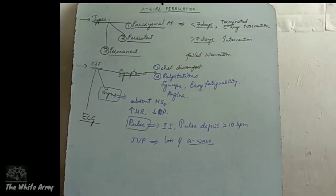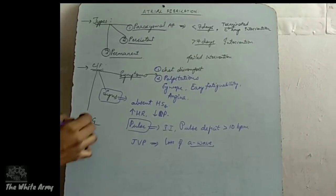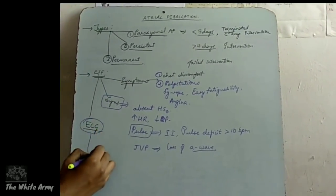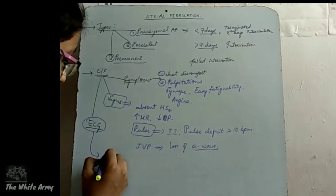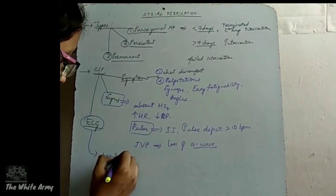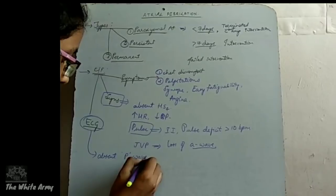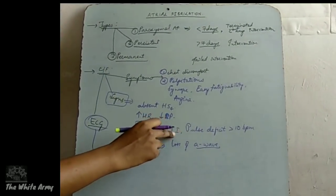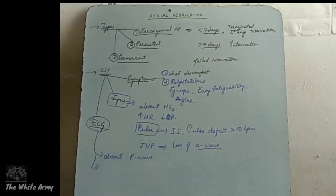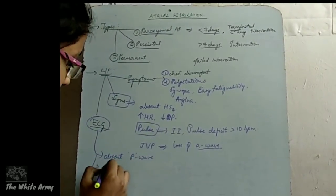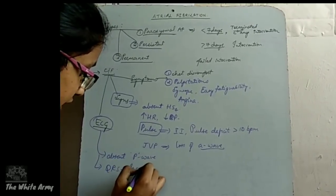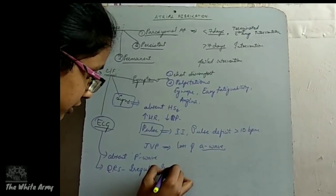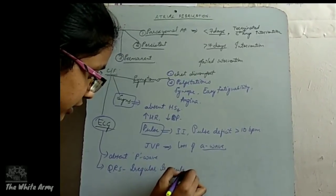What will you expect on ECG? Due to loss of atrial contraction, there will be absent P waves. And because of the irregularly irregular pulse, the QRS complex will also be irregularly irregular in nature.